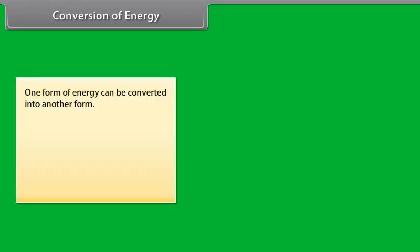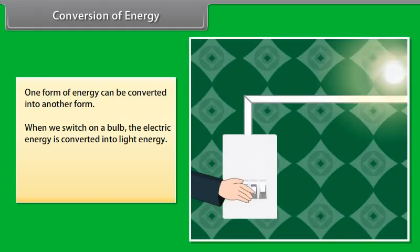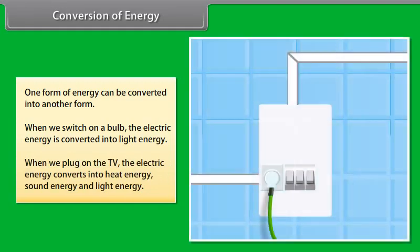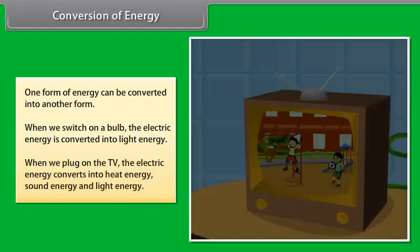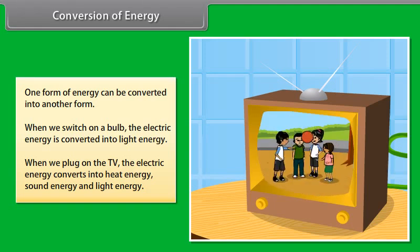Can we convert energy from one form to another? Yes, one form of energy can be converted into another form. For example, when we switch on a bulb, the electric energy is converted into light energy. Similarly, when we plug on the TV, the electric energy converts into heat energy, sound energy, and light energy.